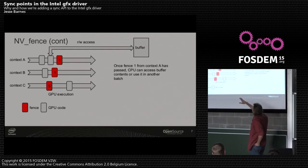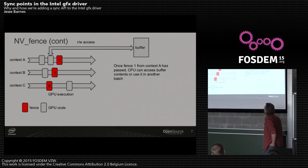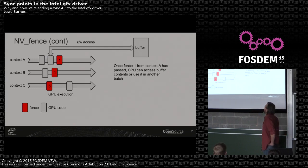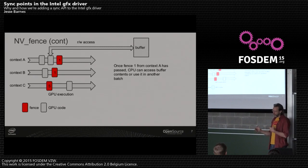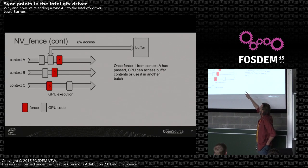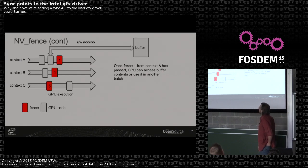In this example you can see several contexts, each submitting batches. The gray blocks are the batches and the red blocks are the fences. So in context A, you submit some work, and once that fence is passed the CPU knows it can start accessing that buffer — it's consistent with the rest of the GL command stream — but you don't have to do a GL finish of your whole operation. That can really improve performance because you can update your vertex buffers while still running other work. In the NV fence case, the namespaces are per context, so context A and context B each have a fence ID of one in them.